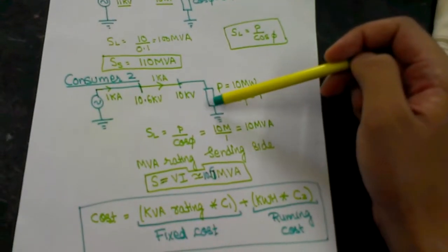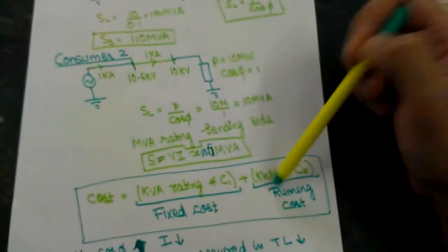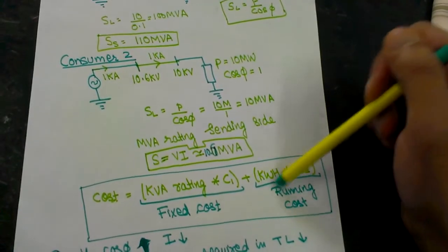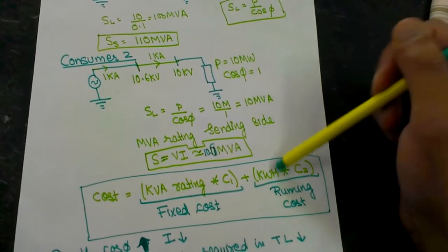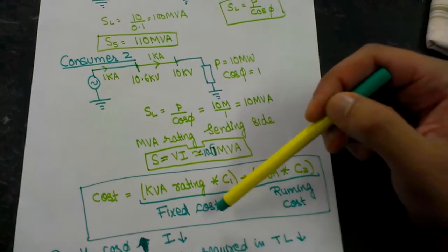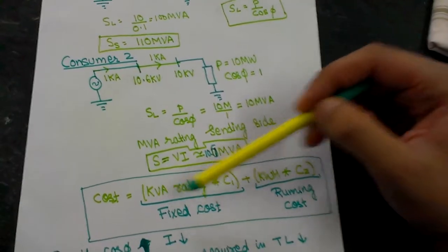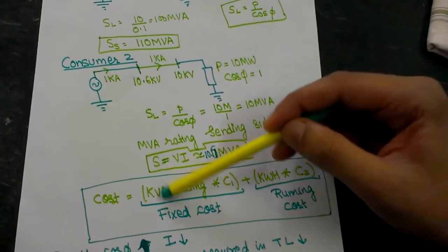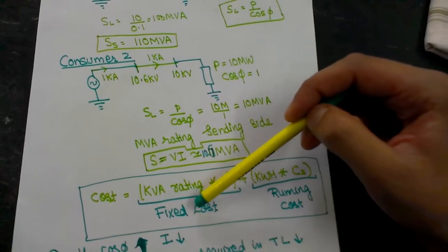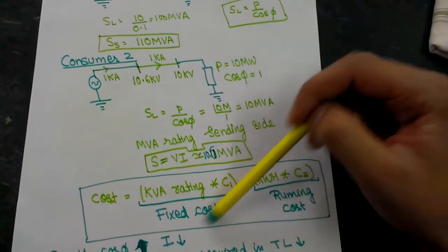That is why the poor power factor customer will be charged more. The cost equation depends on two factors: one is the fixed cost and the second is the running cost. The running cost depends on the watts (real power) you are consuming, while the fixed cost depends on the KVA (apparent power) you are consuming. This fixed cost depends on the power factor — so if you have a good power factor you will be charged less.